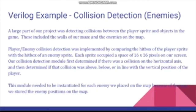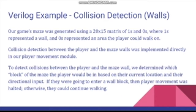A large part of our project involved detecting collisions between the player sprite and the objects within the game. These included the walls of our maze and the enemies on the map. Here you can see example Verilog code for how we detected a collision between the player sprite and the enemy sprite. We had to create a separate collision detection module to detect when the player sprite interacted with the walls of our maze.